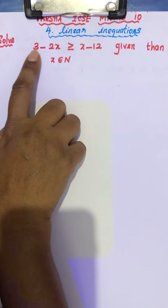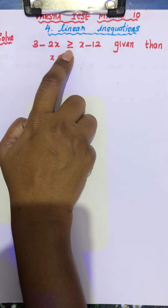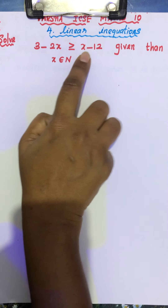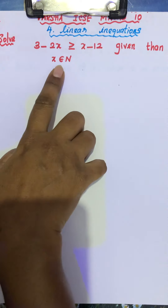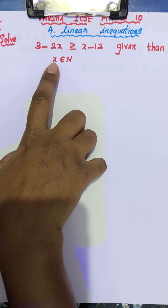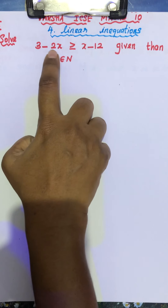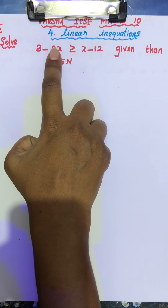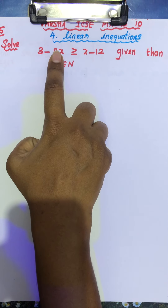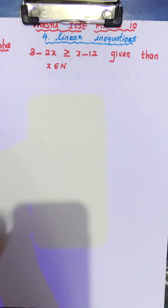Solve this equation: 3 minus 2x is greater than or equal to x minus 12. Given x belongs to natural numbers. You have to find the value of x. This is question number 5.